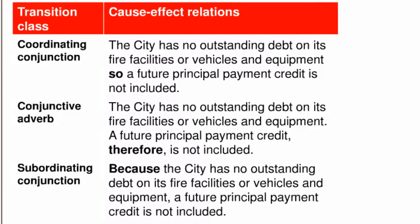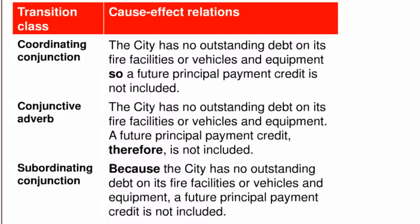Consider how the three classes of transitions might be used to signify the cause-effect relation in this passage from the planning report. The first possibility is using a coordinating conjunction like "so" between two independent clauses, which results in combining the two sentences into one. The second possibility is using a conjunctive adverb like "therefore." Conjunctive adverbs are somewhat flexible in terms of placement in the second sentence, but their use always maintains the two sentences as distinct or independent. In this example, "therefore" appears after the subject slot, surrounded by commas. The third possibility is using a subordinating conjunction like "because" to create a subordinate clause, combining the two sentences into one, with a comma signaling the end of the subordinate clause headed by "because."